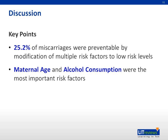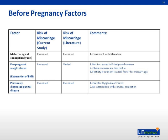In summary, 25.2% of miscarriages were preventable by modification of multiple risk factors to low-risk levels, with maternal age and alcohol consumption being the most important risk factors. The authors compared this study with other studies in the literature. The increased risk of miscarriage with advanced maternal age is consistent with the literature. However, results for pre-pregnant weight status appear varied — possible reasons include that obese women are less fertile, or that fertility treatment itself is a risk factor. The risk for previously diagnosed genital diseases was consistent with literature only for dysplasia of the cervix, while no association with cervical colonization was found.